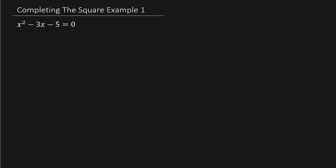I picked this one because we're going to end up with fractions, everybody's favorite. So remember, you've got x squared minus 3x—leave a space—equals 5.